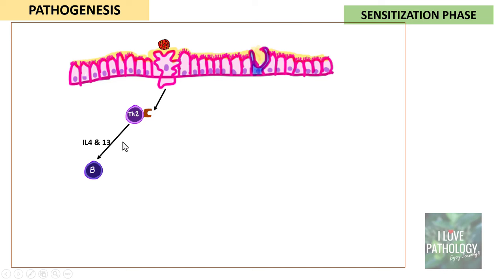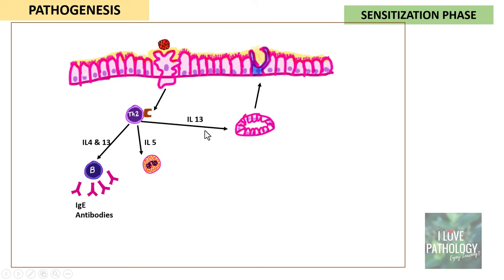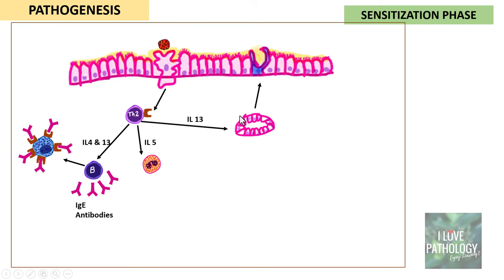Once the antigen-presenting cells present the antigen to T-helper cells, the T-helper cells release lots of cytokines. First, interleukin-4 and interleukin-13 stimulate B cells, which mature into plasma cells producing IgE antibodies. Second, interleukin-5 stimulates eosinophils. Third, interleukin-13 helps in proliferation and hypertrophy of submucosal glands, leading to increased mucous secretion. Once IgE antibodies are present in the sub-epithelial region, mast cells there have receptors for these IgE antibodies — the IgE binds to mast cell receptors, creating a sensitized mast cell. This completes the sensitization phase.